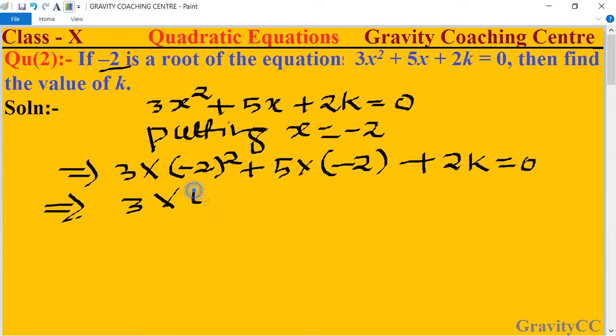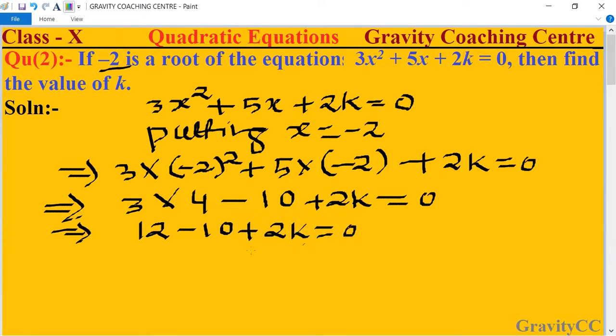This gives us 12 - 10 + 2k = 0, which implies 2 + 2k = 0, therefore 2k = -2.